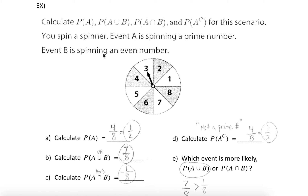So that would be the probability of spinning a prime number. Let's take into account another event: what if we spin an even number? Now we can compare those two events. What's the probability of the union — spinning a prime number or an even number? Well, 2, 3, 4, 5, 6, 7, and 8 all satisfy either prime or even. The only one we couldn't count was 1, so that's seven out of eight possibilities. For the intersection — spinning a prime and an even — there's only one number that's both prime and even: the number 2. So we only have a one out of eight chance of hitting that.